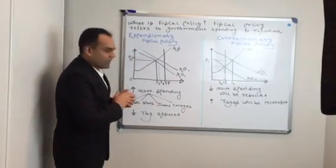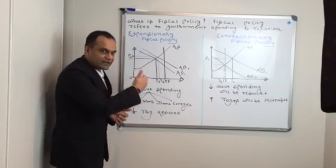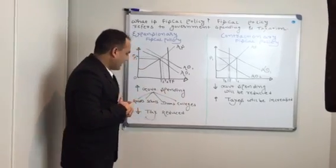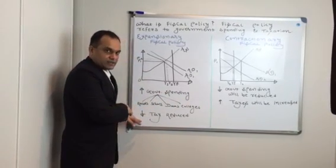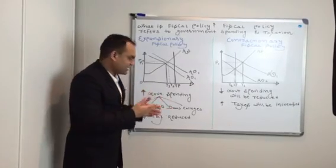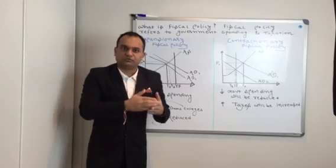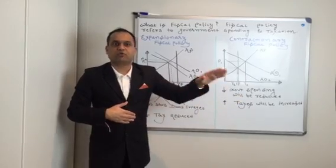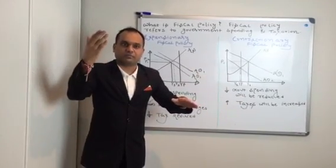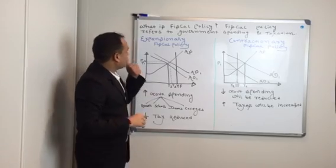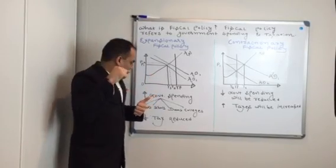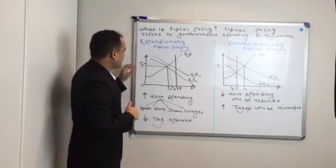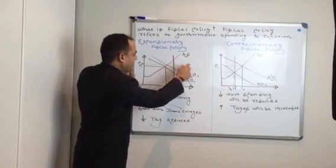In expansionary fiscal policy, the government would increase their spending — they would start building roads, schools, dams, and colleges. They would also reduce income tax. There will be a reduction in taxes because the government wants consumers to end up with more disposable income. If there is more disposable income, there will be more spending in the market, more demand for goods and services, and that will ultimately raise the GDP of the economy. So in expansionary fiscal policy, government spending increases or taxes go down — those are the two tools.